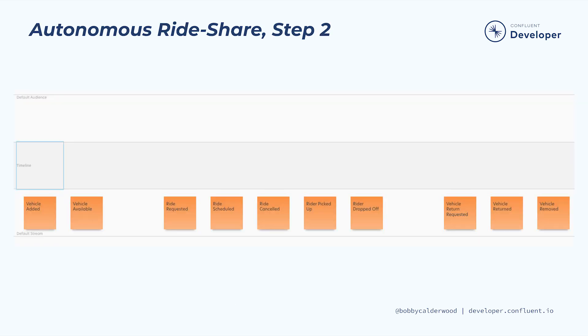Here's our rideshare example after sequencing and filtering our events. Notice how this sequence of events reads like a plausible story and doesn't involve any low-level software or systems concerns. We've completed step one of our event modeling process by capturing the business narrative as a sequence of events. This narrative acts like the script of a film by setting the major plot points and focusing the group's understanding of the problem to be solved. In our next step, we'll create a storyboard from this script by adding the visuals illustrating the user experience.